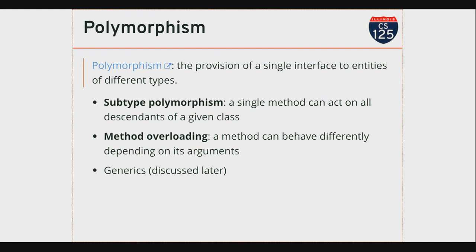Any questions before we do some examples? Great question — what's the distinction between overriding and overloading? In Java, I overload a method by providing multiple implementations with the same name that take different arguments. I override a method that I've inherited from one of my ancestors by providing the same method that takes the same arguments. Overloading is like having five different versions of sum all defined in the same class. Overriding is: Object defined toString but its implementation isn't very good, and I have more information I'd like to provide when someone tries to print me out, so I override that method.